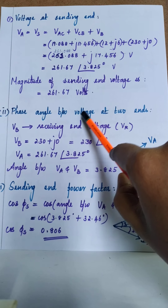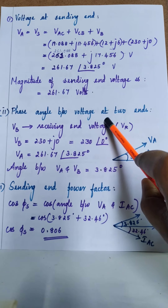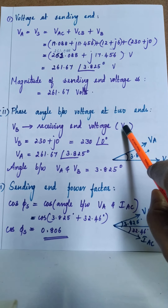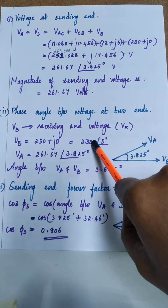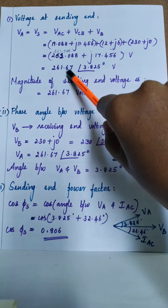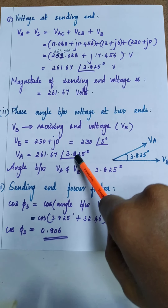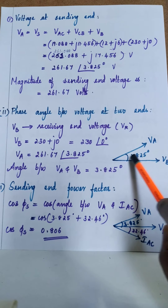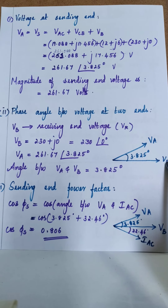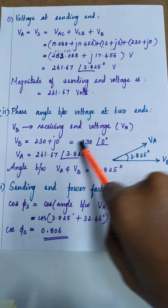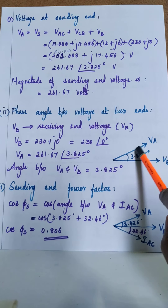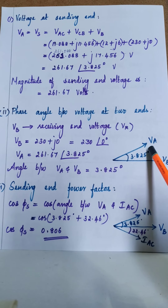The second part is the phase angle between voltages at the two ends — that is, the angle between sending end voltage and receiving end voltage. The receiving end voltage VB is taken as the reference, so VB = 230∠0°, and the sending end voltage VA = 261.67∠3.825°. The angle between VA and VB is therefore 3.825°. In the phasor diagram, VA is drawn ahead of VB by 3.825 degrees, since the positive angle indicates VA leads VB.